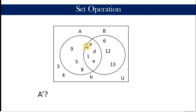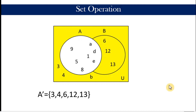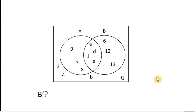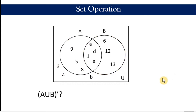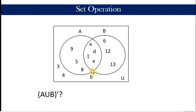Using our Venn diagram, A prime is everything outside the subset A — we list all the elements colored yellow. B prime is the set containing all the elements outside B, the region colored yellow. For a combined problem: the complement of A union B — we first find A union B, which is everything inside the two subsets. Then the complement of A union B is everything outside the two subsets.